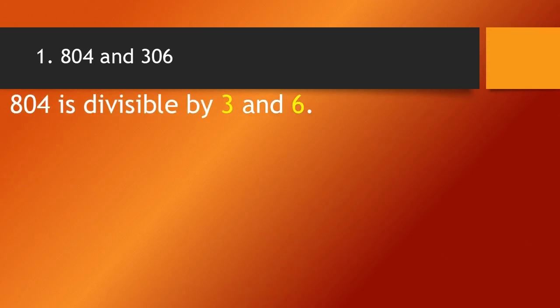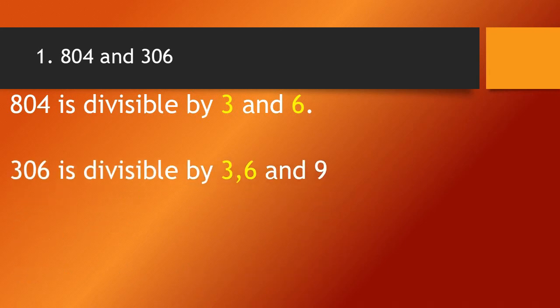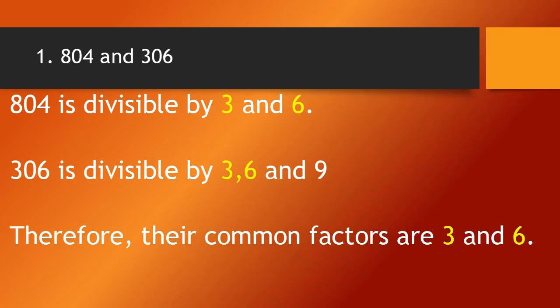How about the next number? 306 is divisible by 3, 6, and 9. Because the digits 3 plus 0 plus 6 equals 9, so it is divisible by 3 and 9. And why is it divisible by 6? Because it ends with an even number, which is 6. Therefore, their common factors are 3 and 6.